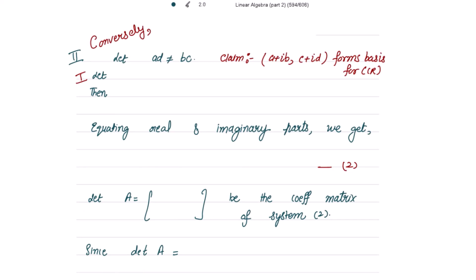Now the converse part: let ad ≠ bc, and we claim that {a+ib, c+id} forms a basis for ℂ over ℝ. To show this, I have to prove that these two vectors are linearly independent and that they are generators of ℂ over ℝ. Again, take the linear combination with scalars α and β.